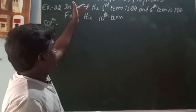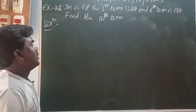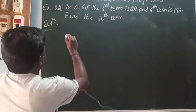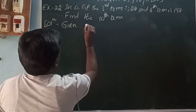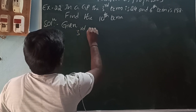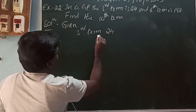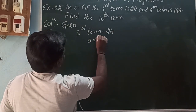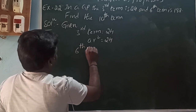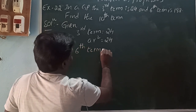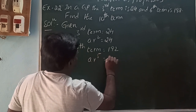So in a GP, the third term is 24 and the sixth term is 192. Find the tenth term. Given: the third term a·r² = 24, and the sixth term a·r^5 = 192.